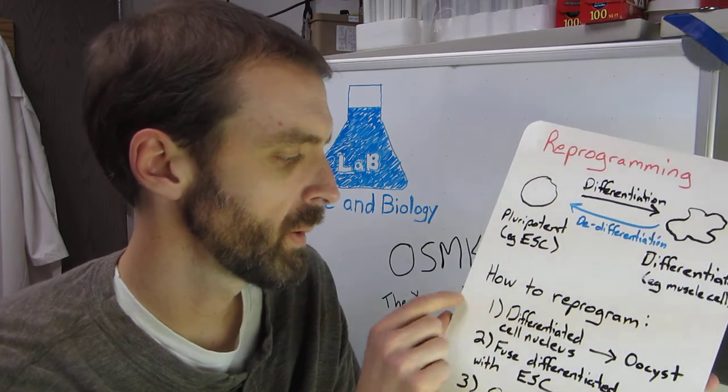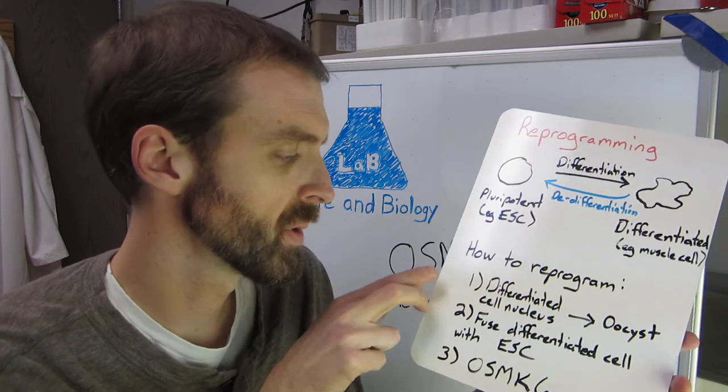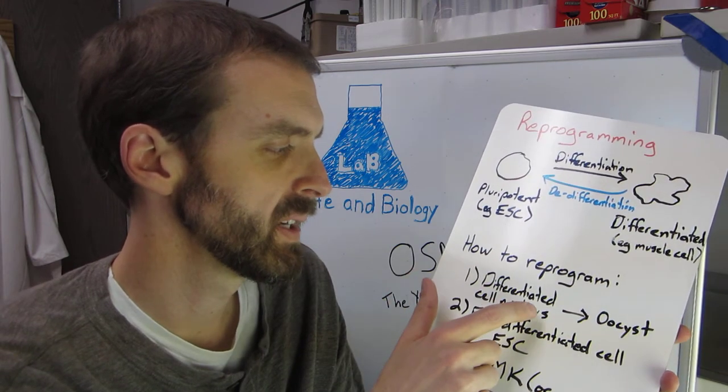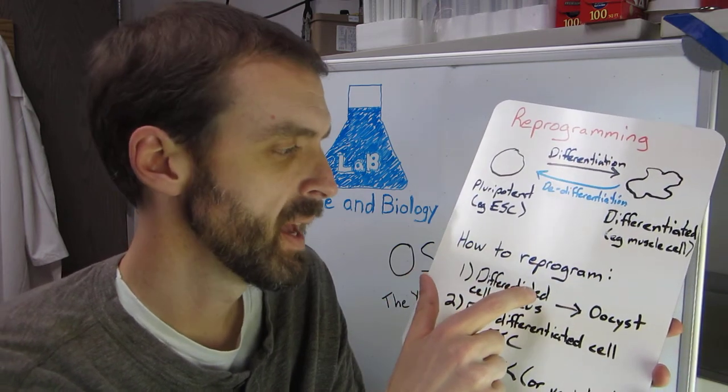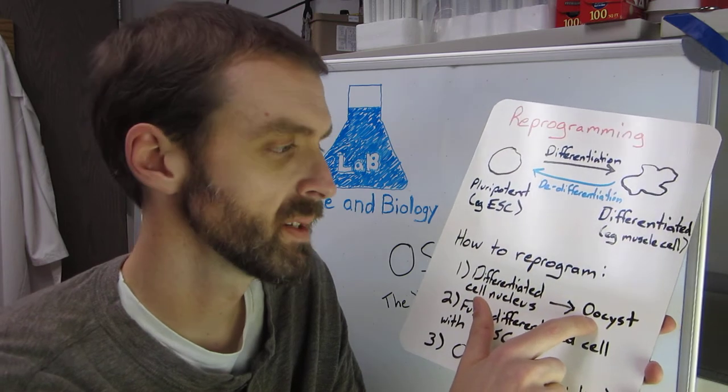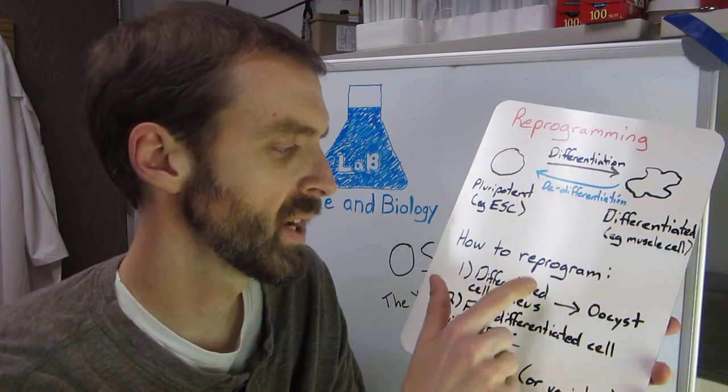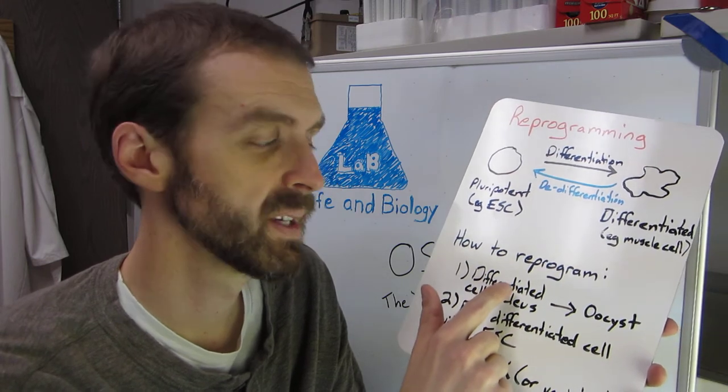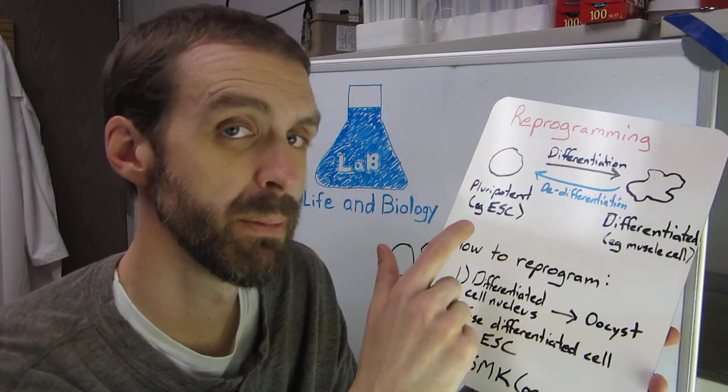So how to reprogram? Well, the very first sentence in the paper talks about two ways you can do that. One, you can take a cell nucleus from a differentiated cell and put it into an oocyst. And that will change the DNA qualities of this nucleus so that it's kind of like an embryonic stem cell.